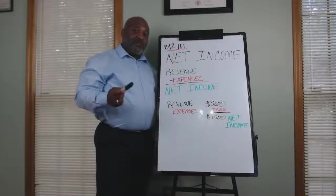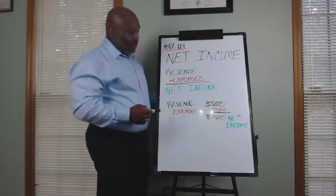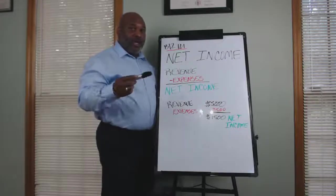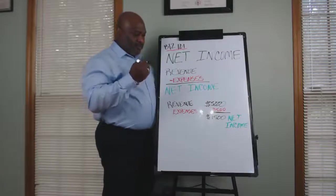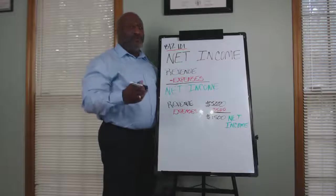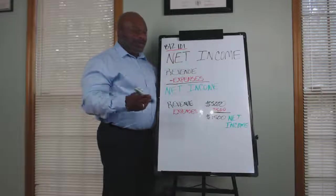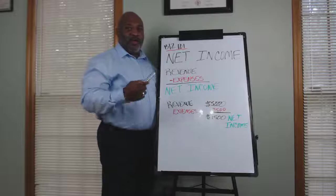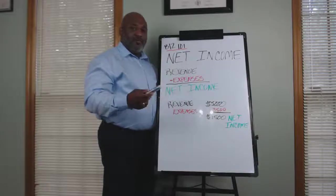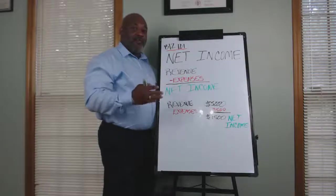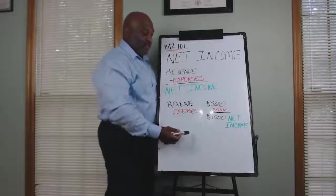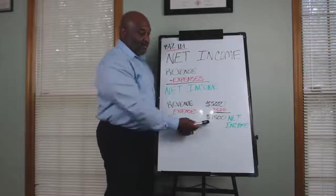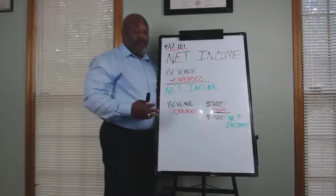Just to give you guys an example — when we're talking about net income, we're looking at revenue or sales. You've sold so many items, maybe food, maybe services, whatever. Minus the expenses, which are basically going to be payroll, rent, utilities, insurance, and different things you're putting out in relation to operating that business. That all leads to your net income — the profit or loss you have with your business.